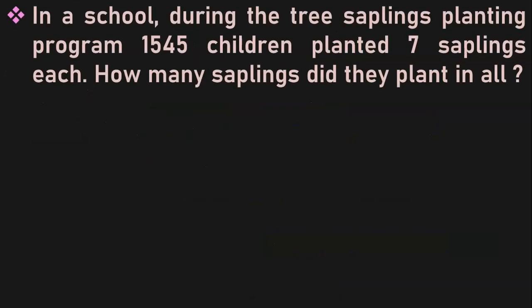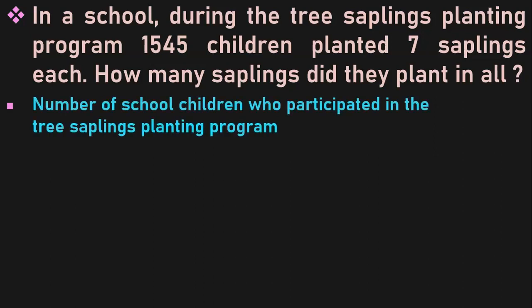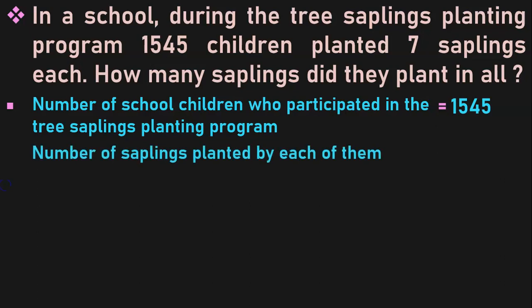The first sum that we are going to do is: In a school, during the Tree Saplings Planting Program, 1545 children planted 7 saplings each. Number of school children who participated in the Tree Saplings Planting Program is equal to 1545. Number of saplings planted by each of them is equal to 7.